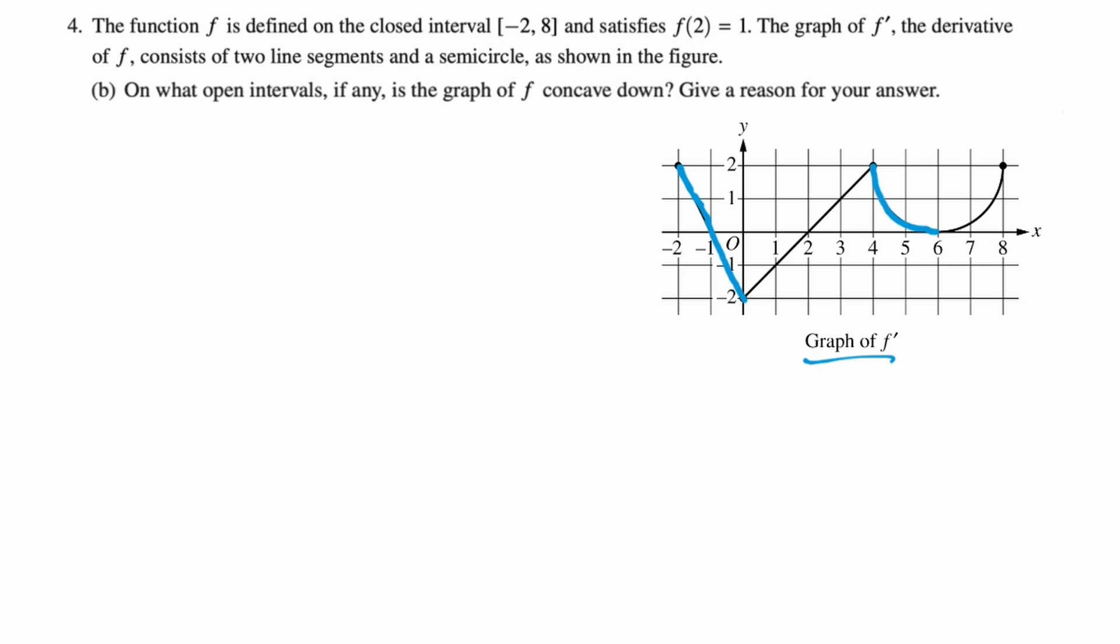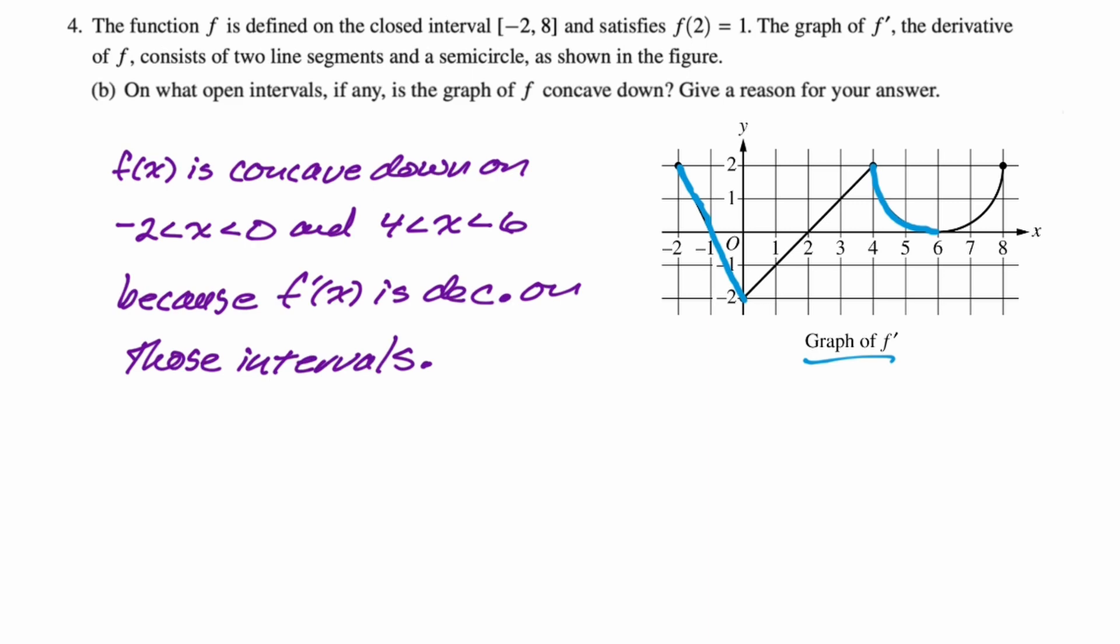So I'm going to say f of x is concave down on the first interval negative two to zero, and the second interval is from four to six. I have to give a reason. So this is the graph of f prime. We want to base it on the graph. So I will say because f prime is decreasing on those intervals, and that's it.